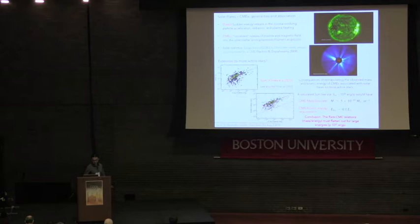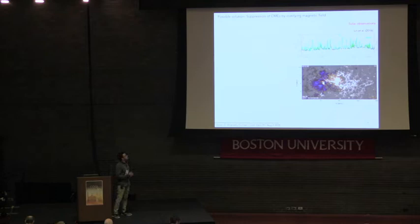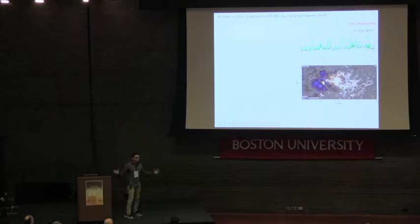One possibility is the suppression of CMEs by an overlying magnetic field. This is an idea coming from solar observations. I'm presenting you a very nice, probably for the solar audience, active region 2192, occurred in October 2014. It's the largest active region in the last 28 years. It generated more than 100 flares, 32 M-class flares, 6 X-class flares, but only one CME - a very tiny CME. In principle the explanation for this was this very strong dipolar-like magnetic field of 1,500 Gauss.